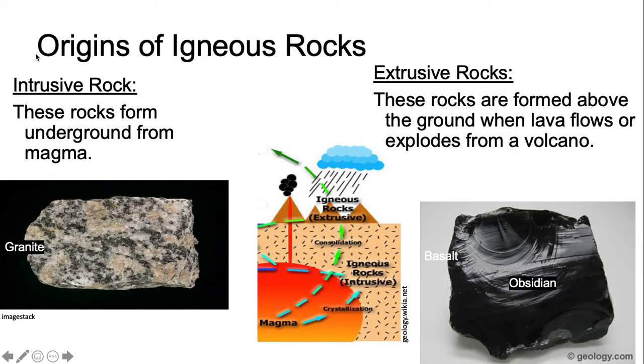For igneous rocks, they're either intrusive or extrusive. Intrusive are underground, forming from magma. Extrusive are above ground, forming from lava.